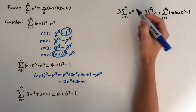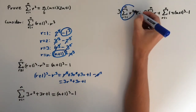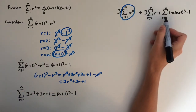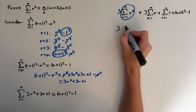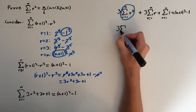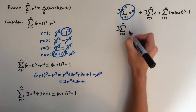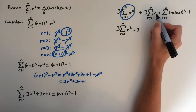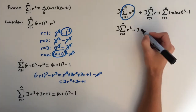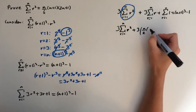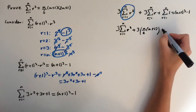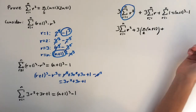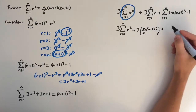This term here — sigma of r squared — is what we're trying to find, so we're going to rearrange for this. We need to input what the other series equal. We know that the sum of the natural numbers from 1 to n equals n over 2 times n plus 1. And the sum of 1 from r equals 1 to n is just adding 1 n times, so that equals n.